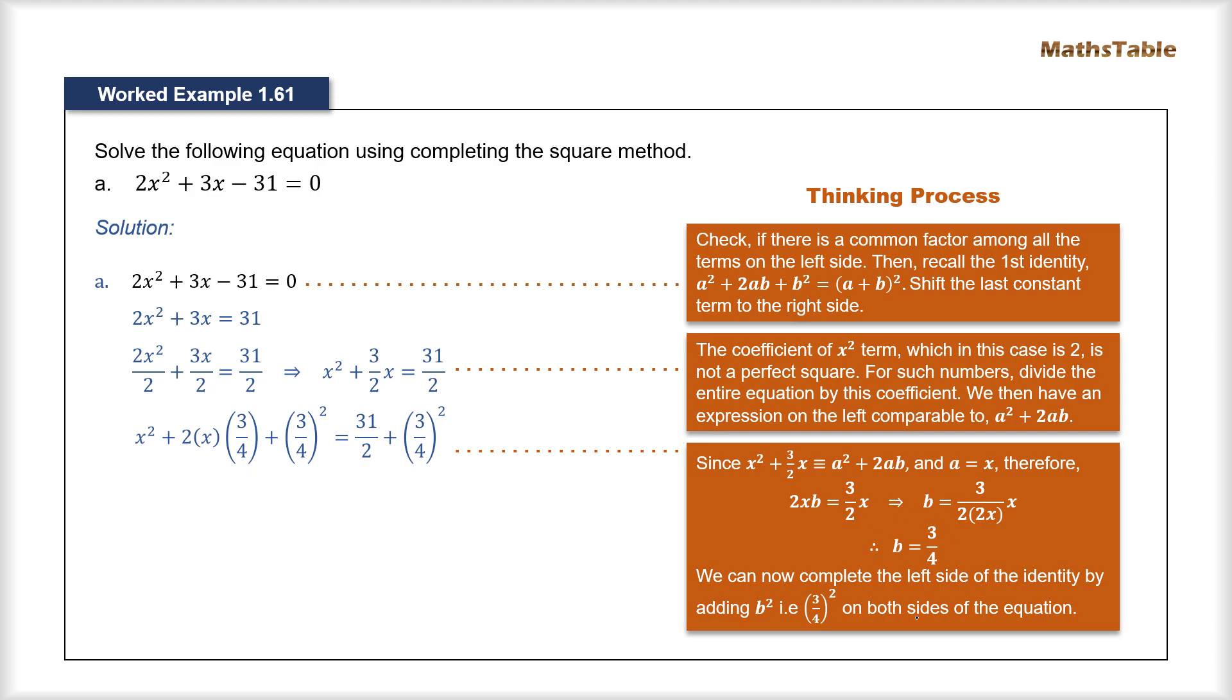So now when we know the value of b we can simply complete this left hand side by simply adding the remaining part b² on the left side of our equation. But if we add the value of b² which in this case is (3/4)², we also need to add it on the right hand side because we need to keep this equation balanced.